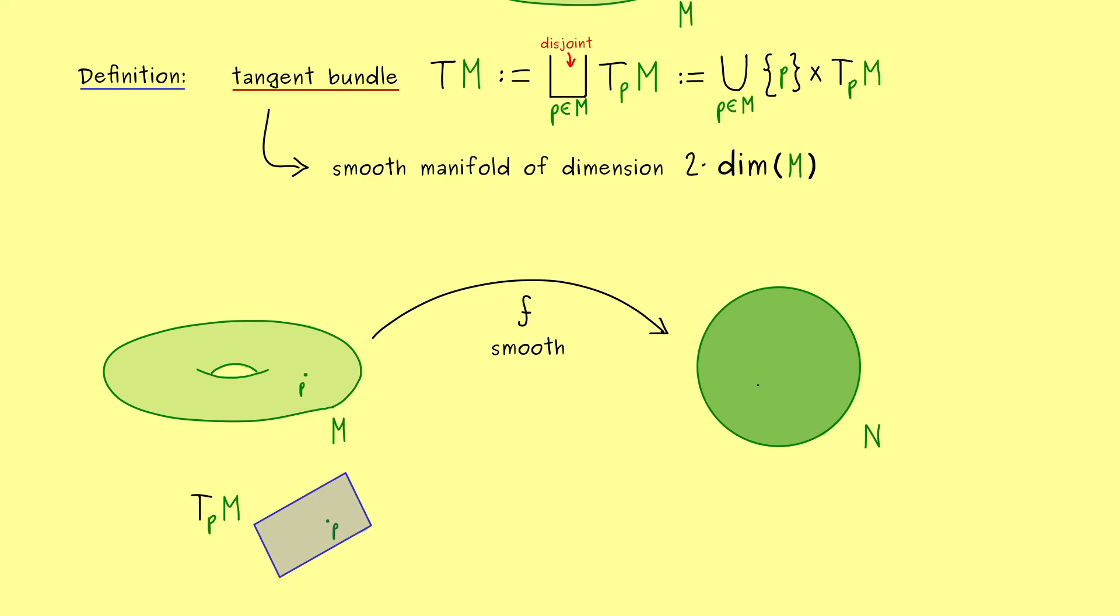Now we know for each point p and on the other side for each point f(p) we find a tangent space. Therefore we have a tangent space here on the left hand side and on the right hand side. These are vector spaces and we will also find a linear map between them. This linear map is induced by the smooth map f. In other words it's similar to a derivative and we call it df_p. More precisely we call it the differential of the map f at the point p.